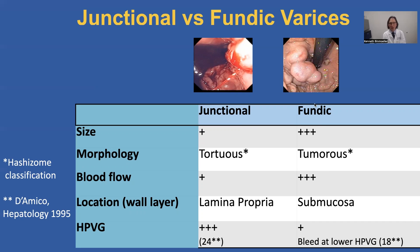The blood flow in these larger fundic varices is very rapid, and less so in the junctional varices. The location is submucosa for fundic varices, versus lamina propria — so much more superficial — for junctional. The HPVG is always significantly elevated for junctional varices versus fundic varices, where it can be normal or just mildly elevated. These fundic varices bleed at a much lower HPVG. In a study from D'Amico, 18 was the average for fundic, and the HPVG was much higher at 24 for junctional.